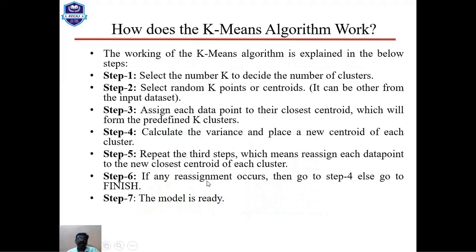The working of the K-Means algorithm follows these steps. Step 1: select the number K to decide the number of clusters. Step 2: select random K points or centroids — these can be other points from the input dataset. Step 3: assign each data point to its closest centroid, which will form the predefined K clusters.